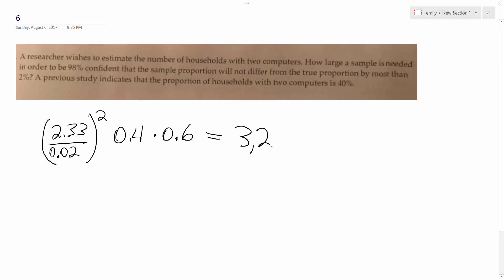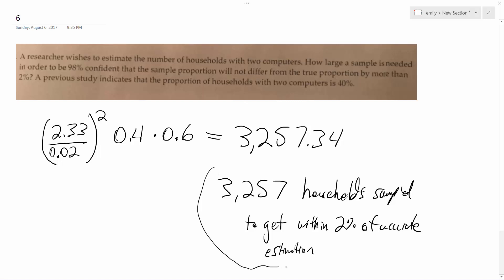sample at least 3257.34, or roughly just 3257 households sampled to get that within 2% estimation. Okay, that's it.